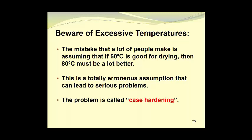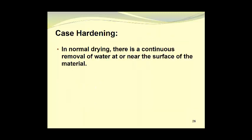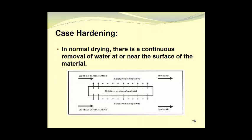The problem is called case hardening. In normal drying, there is a continuous removal of water at or near the surface of the material, and here you see warm air blowing across the surface of the material and moisture is leaving the slices. The air leaving the dryer is somewhat cooler and contains more moisture than the warm dry air that was entering the dryer. So, as we keep replenishing the supply of warm dry air and blowing it across the surface, we get the moisture being removed.